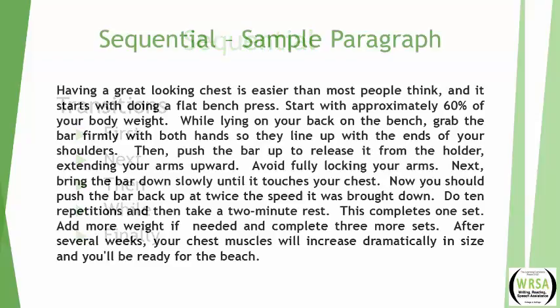Having a great looking chest is easier than most people think, and it starts with doing a flat bench press. Start with approximately 60% of your body weight. Next, while lying on your back on the bench, grab the bar firmly with both hands so they line up with the ends of your shoulders. Then push the bar up to release it from the holder, extending your arms upward. Avoid fully locking your arms. Next, bring the bar down slowly until it touches your chest. Now push the bar back up at twice the speed it was brought down. Do ten repetitions, then take a two-minute rest. This completes one set. Add more weight if needed, and complete three more sets. After several weeks, your chest muscles will increase dramatically in size.